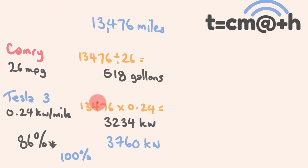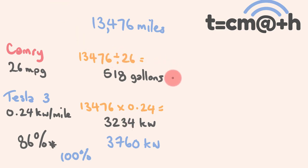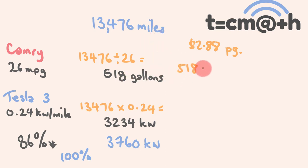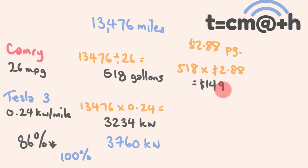Now we know how much of each type of fuel we're using, so we can work out the actual cost. We need the price of petrol per gallon and the price of electricity per kilowatt. The average price of petrol in the US is $2.88 a gallon. We need 518 gallons, so 518 times $2.88 gives us $1,492 per year driving the Camry.